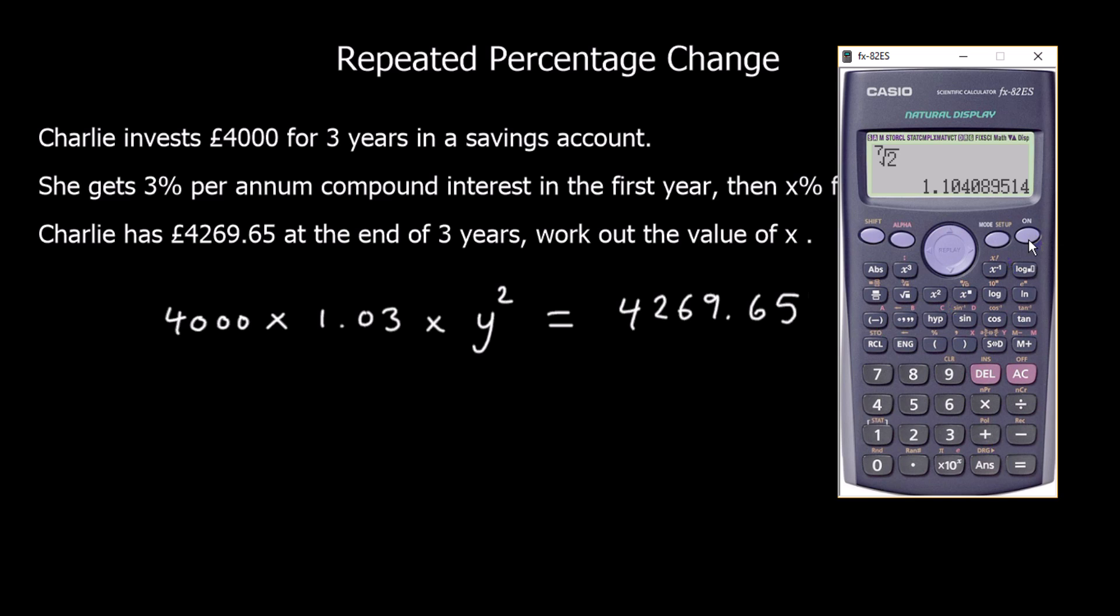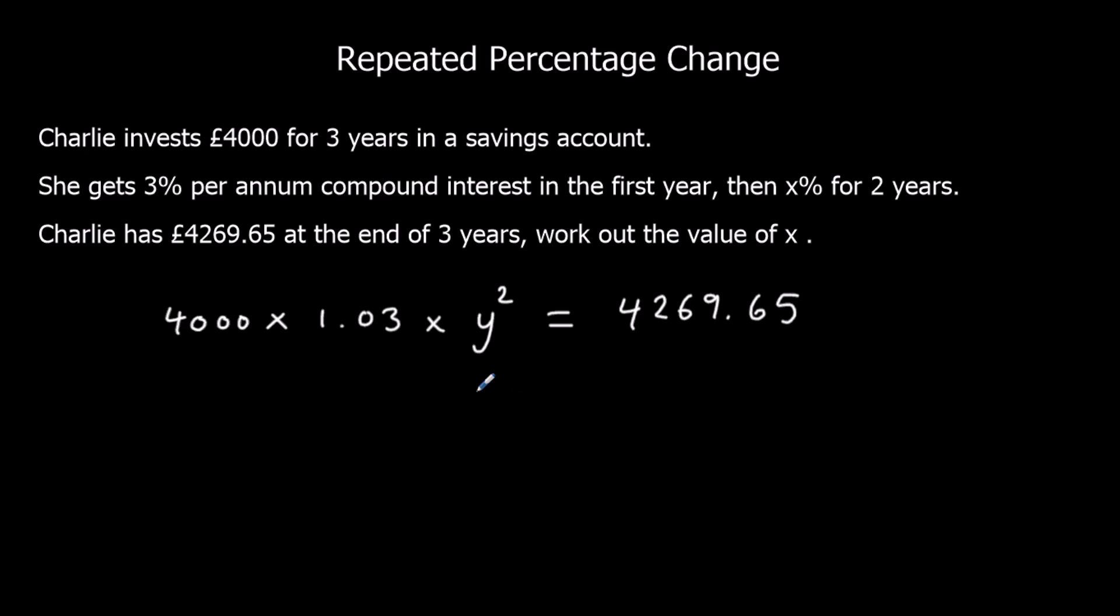So we're going to take our 4,269.65. So if I divide by 4,000, that's 1.067 and so on. And then divide by 1.03 as well, which gives me 1.036 and so on. So I'll write that down. So I've got Y squared equals 1.036.